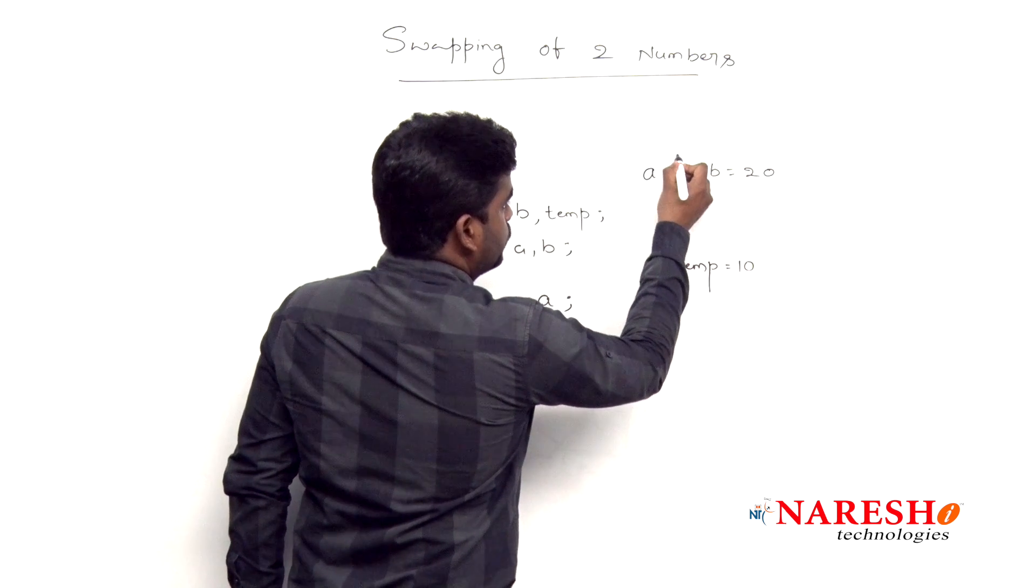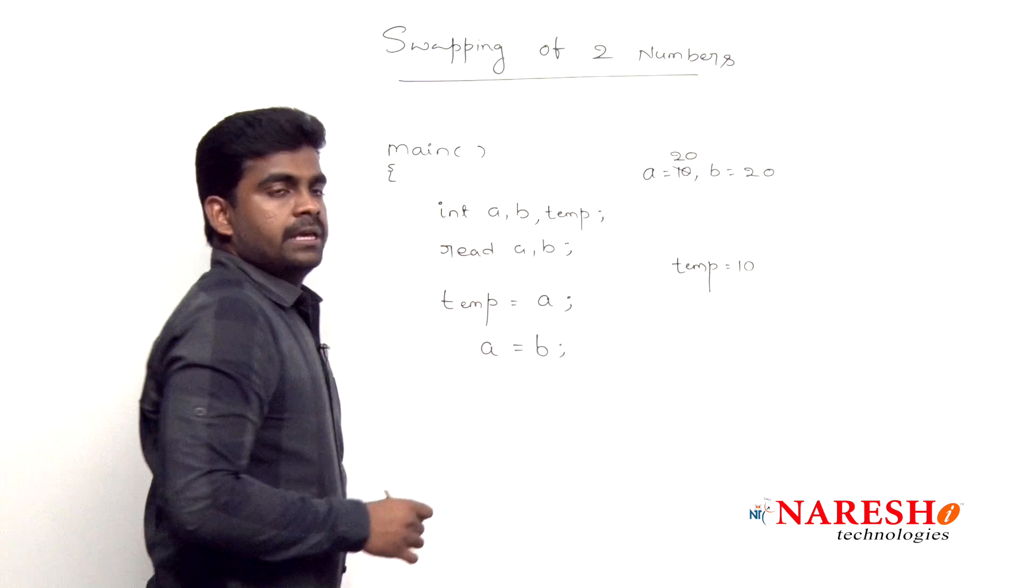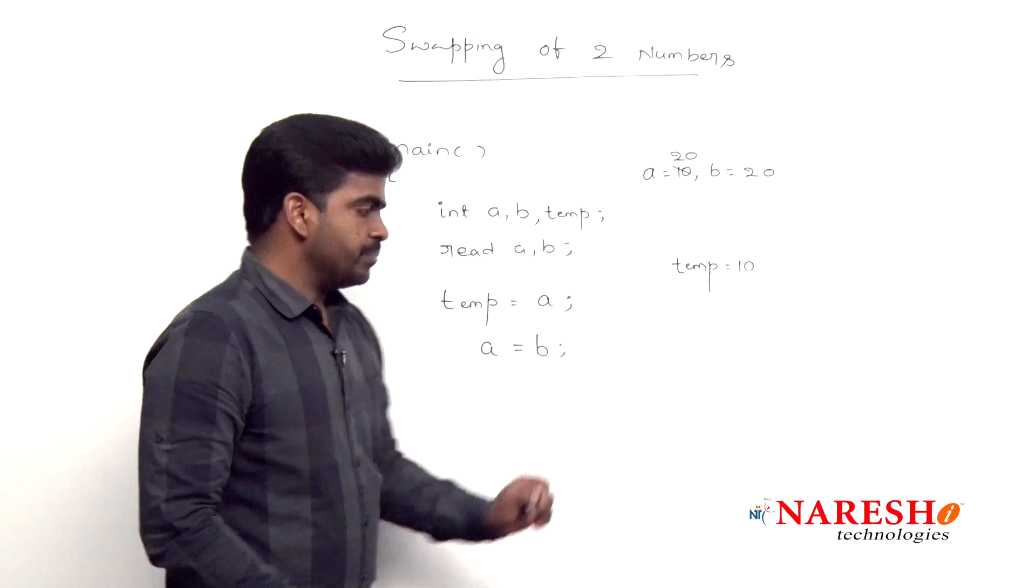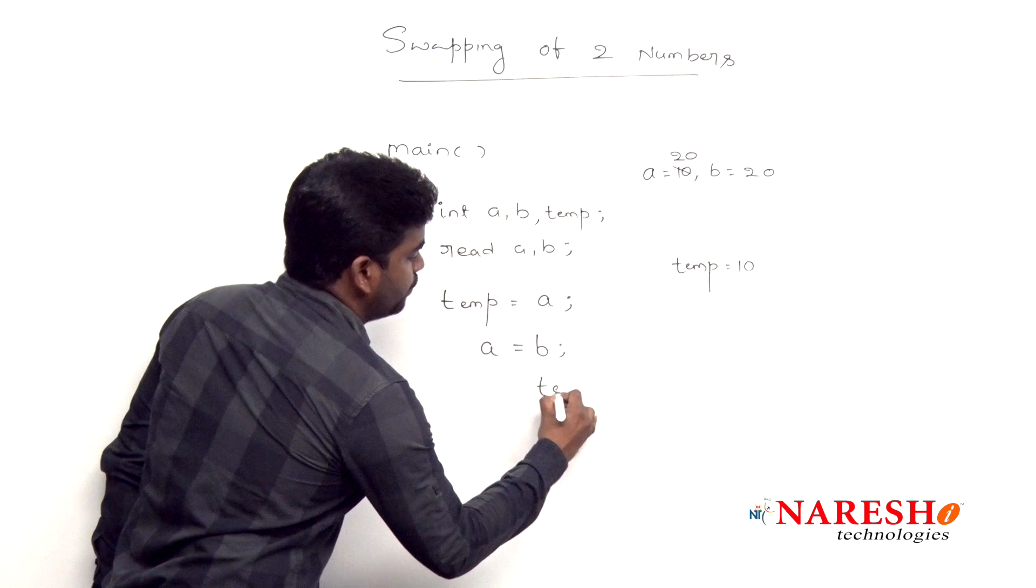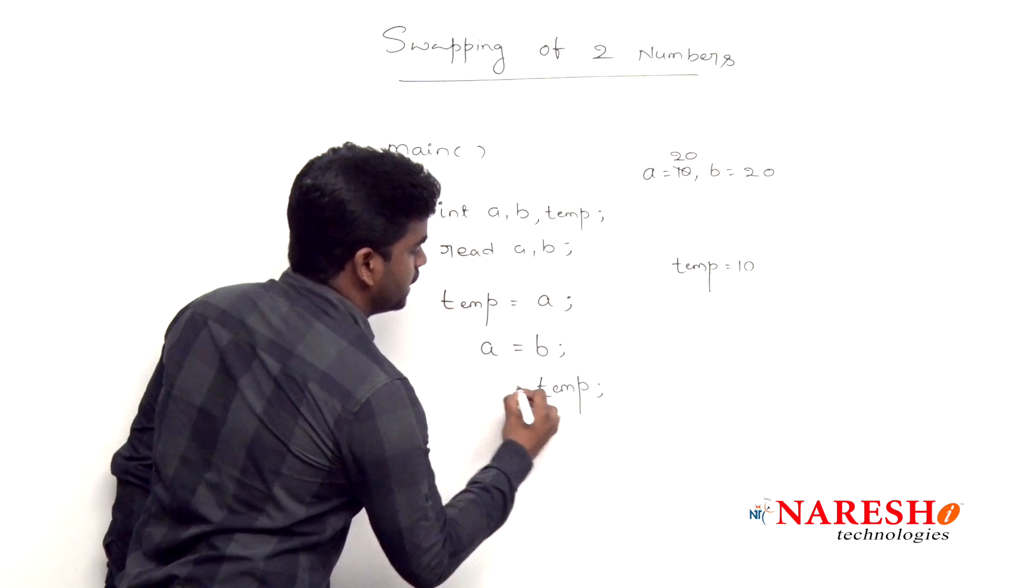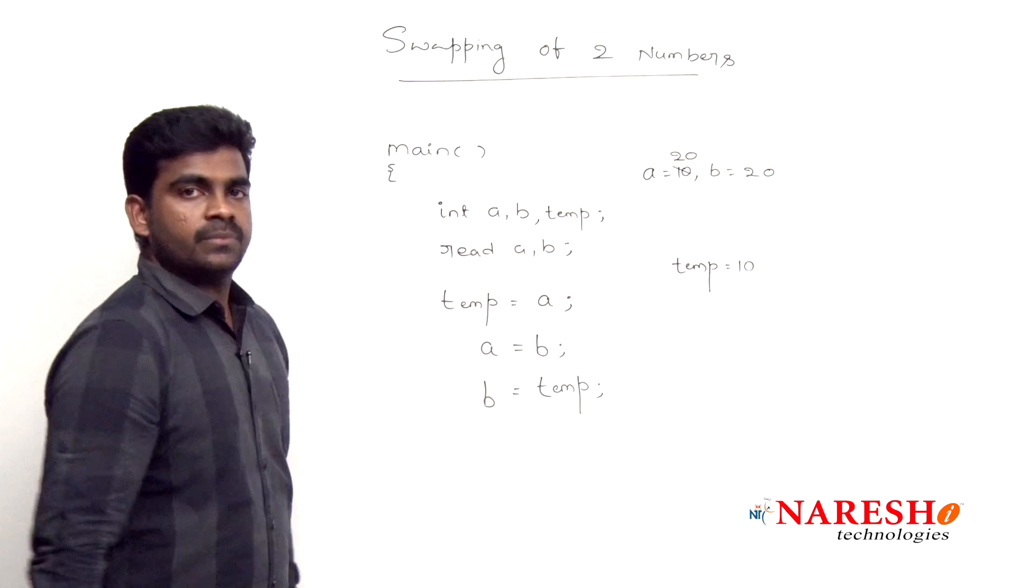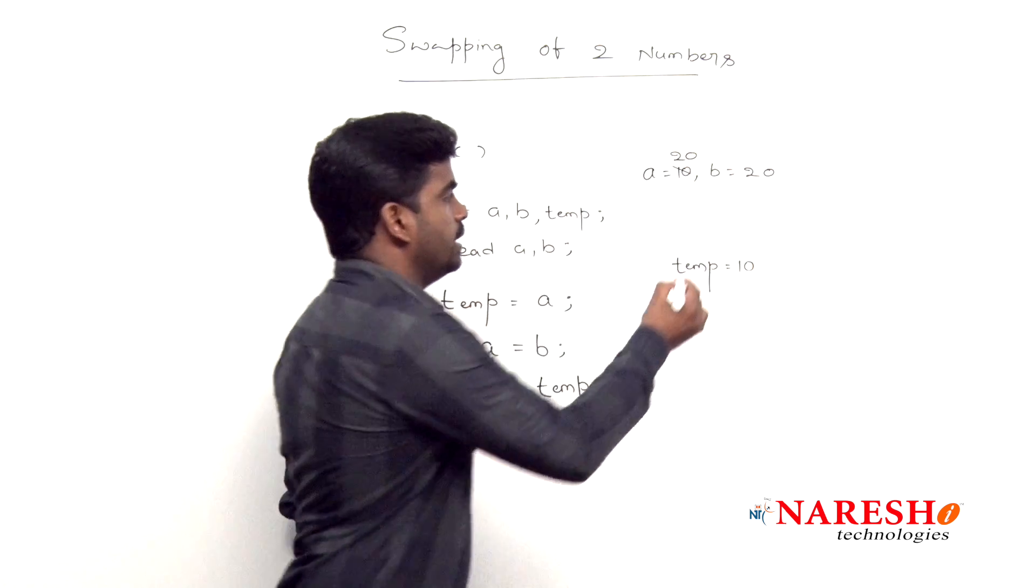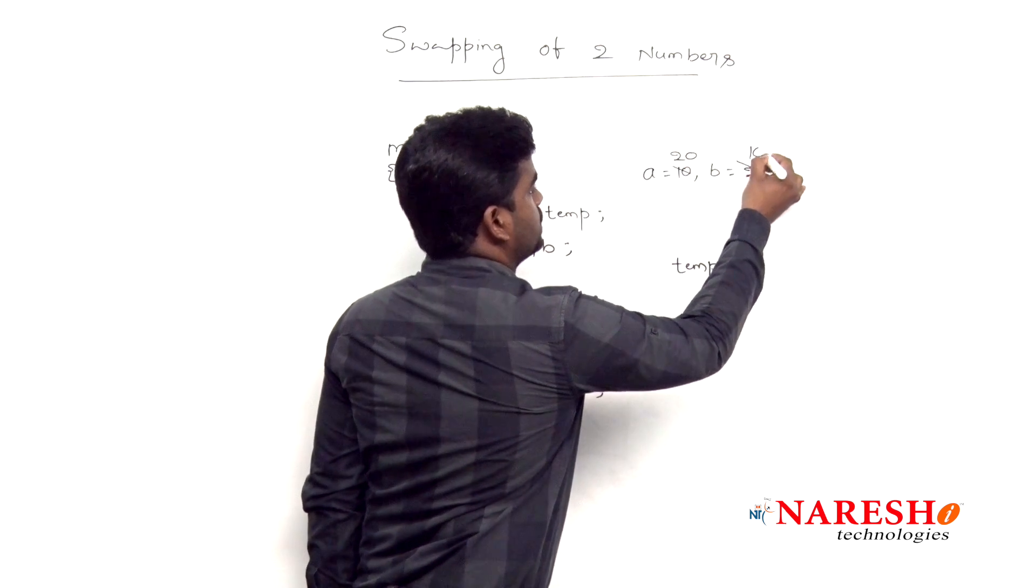Here, when you're storing 20, a value is already safe in the variable temp. And next, we're storing the temp variable into b. What is the temp variable value? 10. That we are storing into b.